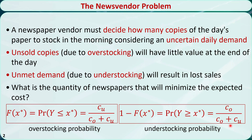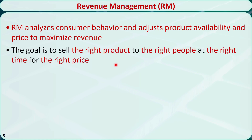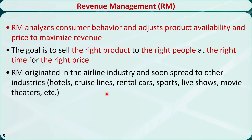The news vendor model can be useful in many other applications that have nothing to do with newspapers at all. For example, it can be used to model and solve revenue management problems. Revenue management is used to analyze consumer behavior and adjust product availability and price to maximize revenue. The goal of revenue management is to sell the right product to the right people at the right time for the right price. Revenue management originated in the airline industry and soon spread to other industries.